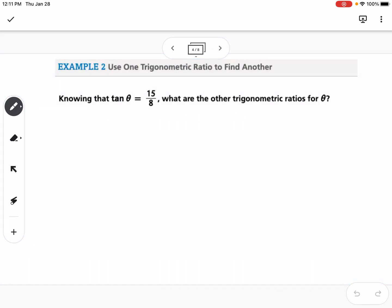Our next example, which is the same as the notes, says knowing that tangent of theta equals 15 over 8, what are the other trigonometric ratios for theta? I'm going to draw a right triangle here. I'm going to pick an angle where I'm going to place theta. We know that tangent is the TOA part of SOHCAHTOA, so it's opposite over adjacent. That means opposite angle theta is going to be 15, and adjacent to angle theta is going to be 8.